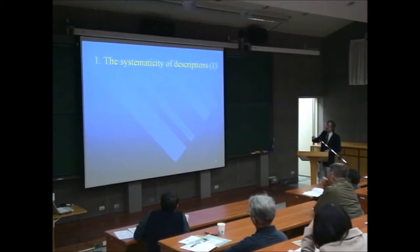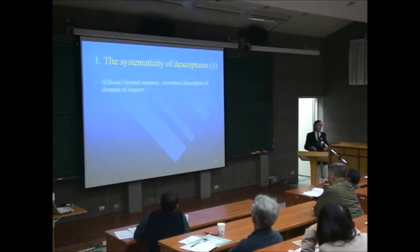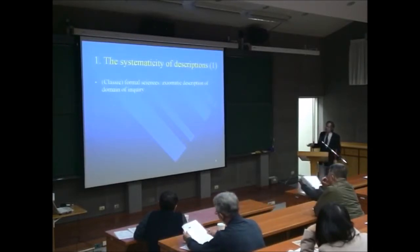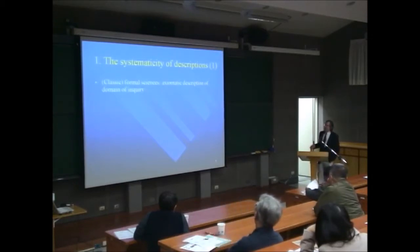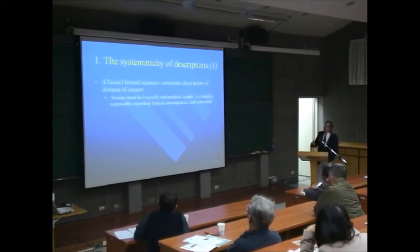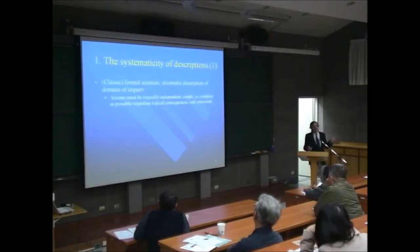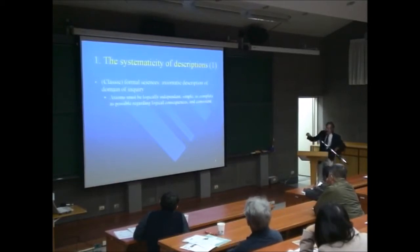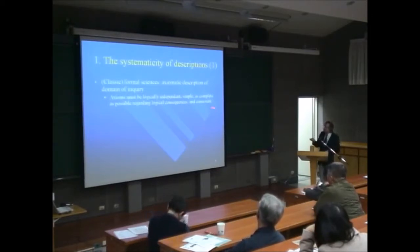Let me start with something which is undoubtedly a very, very systematic endeavor that nobody really doubts: mathematics. The classical formal sciences proceed by axiomatic description. The axioms must be logically independent, simple, as complete as possible regarding logical consequences, and consistent. These are the four postulates on axioms. That is what mathematicians think of as a really systematic description.